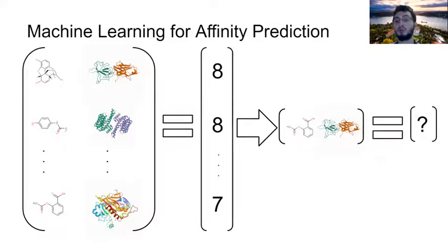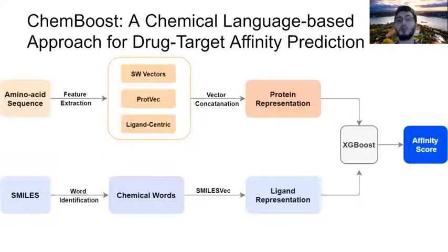And ChemBoost is a machine learning method which is based on the chemical language, and it aims to predict the affinity between any drug target pair. ChemBoost uses two channels to represent proteins and ligands and uses a prediction algorithm called XGBoost to predict the affinity between any protein compound pair. So now let's discuss each of these protein ligand channels more in detail.